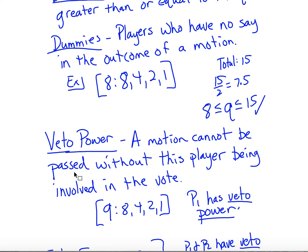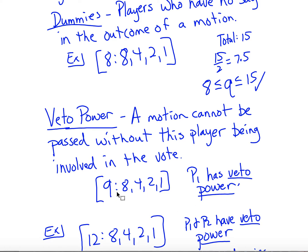We also have something called veto power. A player has veto power when a motion cannot pass without that player being involved. In a weighted voting system with a quota of 9, if player 1 has 8 votes, they are not a dictator because 8 is less than 9. But if player 1 doesn't vote for it, the other three players — with 2 plus 4 plus 1 equaling only 7 — can't make it pass. So player 1 has veto power.